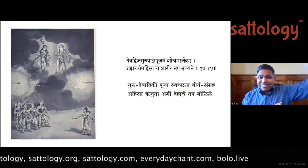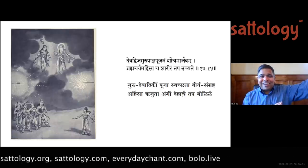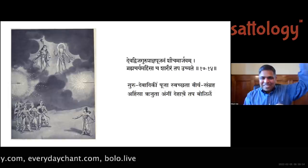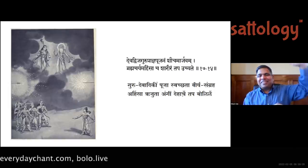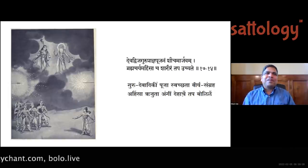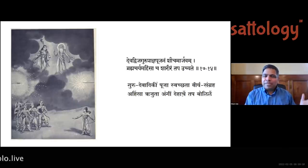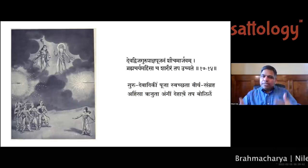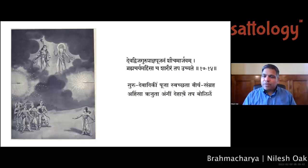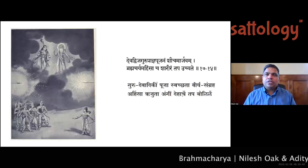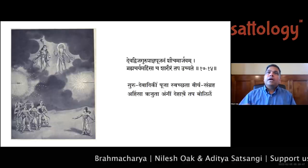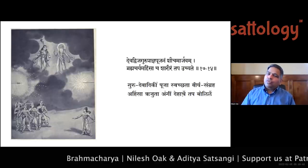Jainism can be looked at as radical ahimsa — a worst-case scenario concept. Just like in chemical engineering or aircraft design, you push something to extreme limits — like Boeing testing wing stress to the breaking point — to truly understand the phenomenon. Jainism did that with ahimsa: radical non-violence, to understand what ahimsa could truly be.